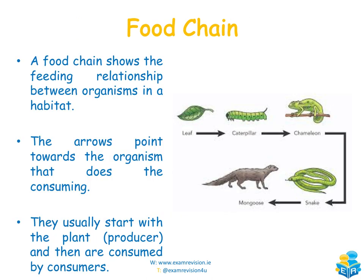A food chain shows the feeding relationships between organisms in a habitat. The arrows point towards the organism that does the consuming. In an example chain, the leaf is eaten by the caterpillar, which is eaten by the chameleon, then the snake, then the mongoose. Food chains usually start with a plant — the producer — followed by primary, secondary, and tertiary consumers. A fourth consumer level is possible but won't always occur.